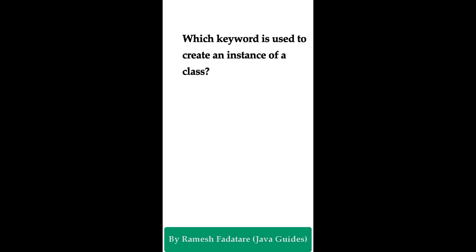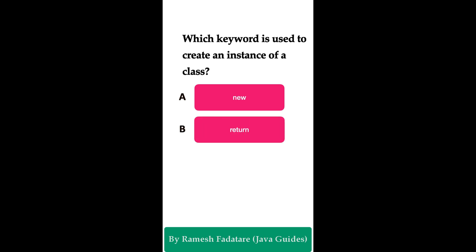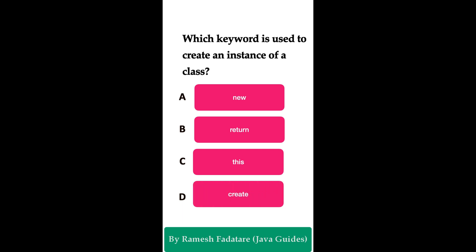Welcome to Java Quiz Series. Here is one more question: Which keyword is used to create an instance of a class? Option A: new keyword. Option B: return keyword. Option C: this keyword. Option D: create keyword. You have five seconds to answer. The correct answer is option A, the new keyword. In Java we use the new keyword to create an object of a class — it is used to instantiate an object.